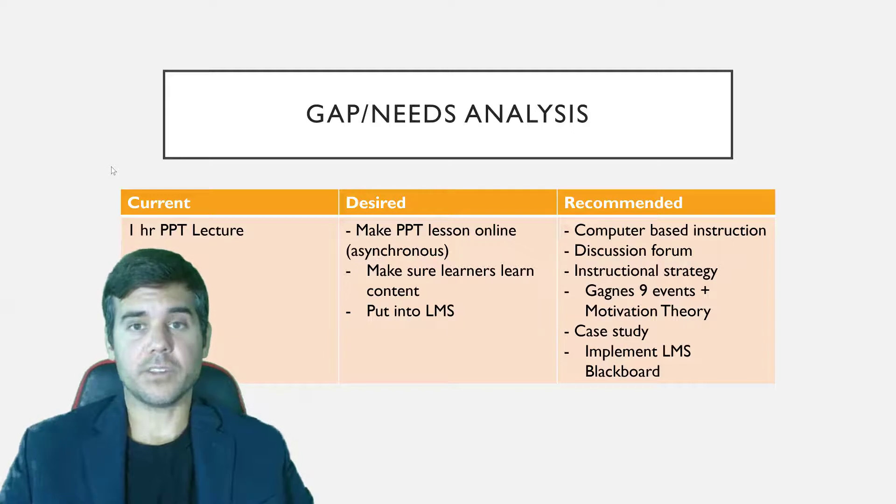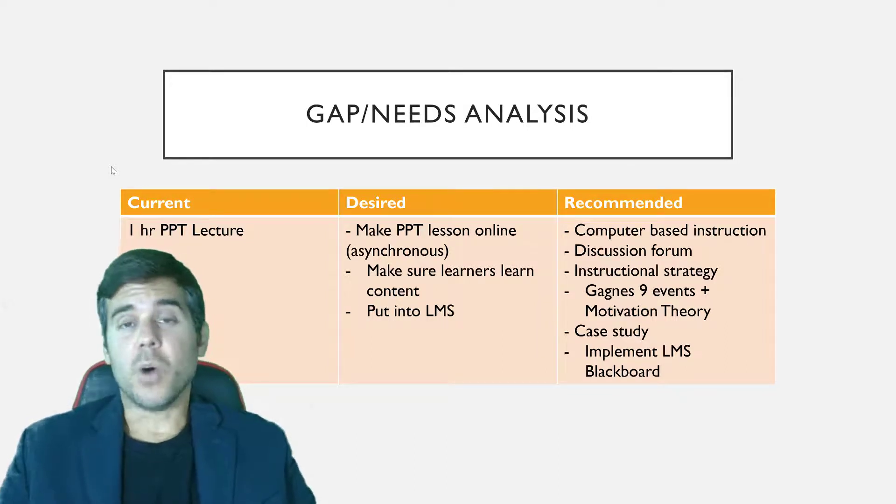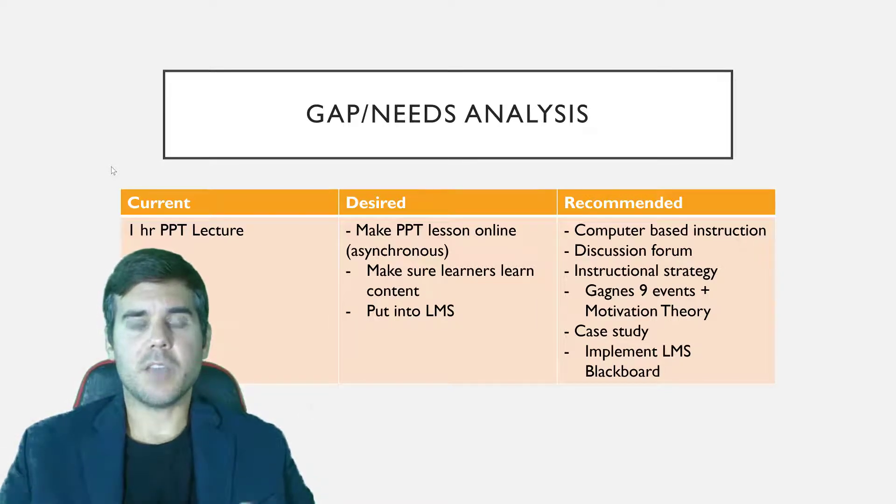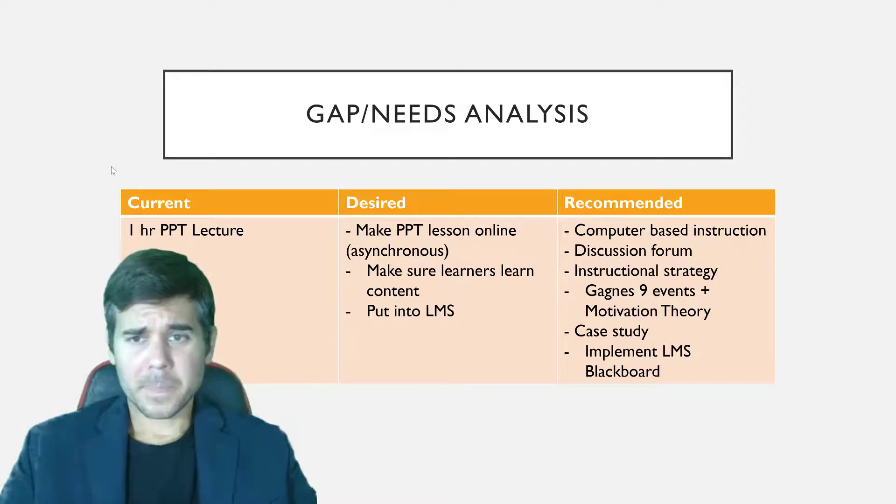So this gap or needs analysis, what does this really mean? I have an example here. The example is we have what we currently have, what the client currently has, what is desired by the client, and then what is recommended. So currently the client has a one-hour PowerPoint lecture. What they want is they want this PowerPoint lecture to be an online lesson. They want it to be some kind of computer-based or online lesson. They also want to make sure that the learners learn the content, and they want to make sure that it's placed into a learning management system or an LMS, such as like Blackboard, Canvas, Desire to Learn, something like that, Moodle.